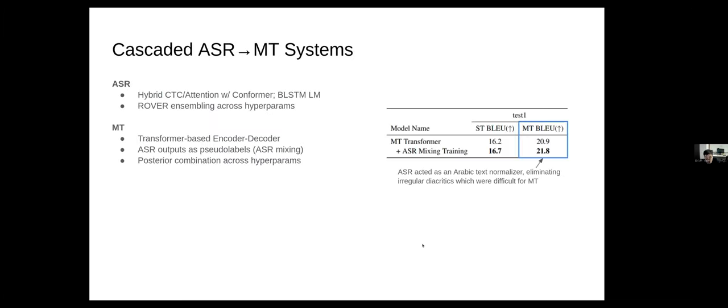We start by building some cascaded systems with ASR and MT components, where our ASR systems are based on the hybrid CTC attention framework with a conformer encoder. We also use the BiLSTM language model. These systems are ensembled across hybrid parameters using rover. Our MT systems are transformer-based encoder decoders, and we additionally use ASR outputs as pseudolabels, a technique we call ASR mixing during training. We also combine systems across different hyperparameters using posterior combinations.